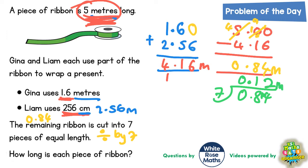Your answer is 0.12 metres. We could have done everything slightly differently. We could actually have turned everything into centimetres. 5 metres would have been 500 centimetres, 1.6 metres would have been 160 centimetres.